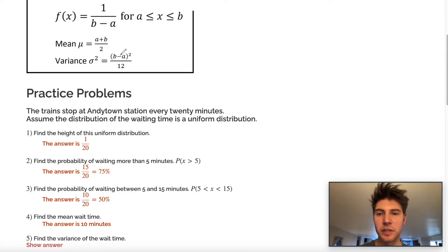And then for the variance, we subtract them, square them and divide by 12. So once again, our b was 20. So it's going to be 20 minus 0 squared over 12. This is going to give us our variance.